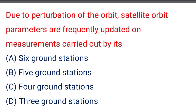Next question: due to perturbation of the orbit, satellite orbit parameters are frequently updated on the measurements carried out by — option A: 6 ground stations, option B: 5 ground stations, option C: 4 ground stations, option D: 3 ground stations.